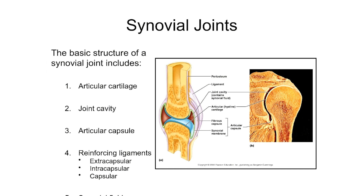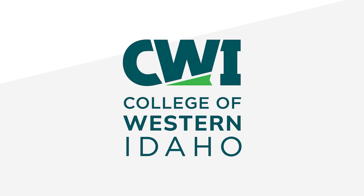The last type of reinforcing ligament is the capsular ligament. When capsular ligaments are present, they are essentially thickenings of the articular capsule itself — the capsule is simply thickened in those areas to form the capsular reinforcing ligament.